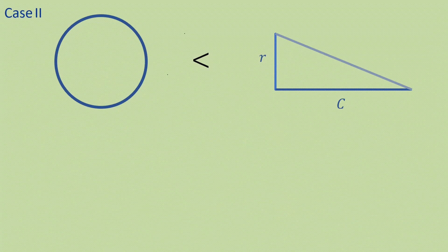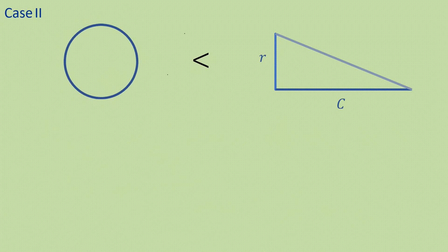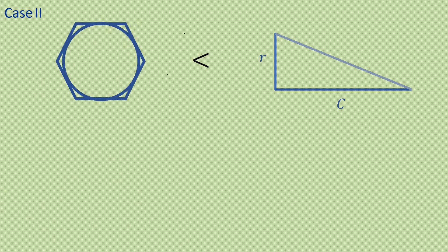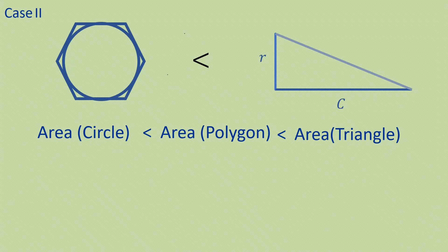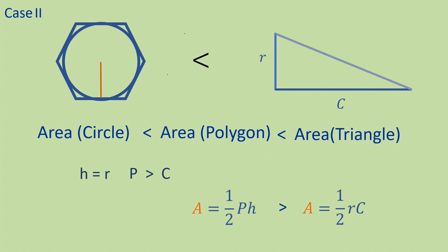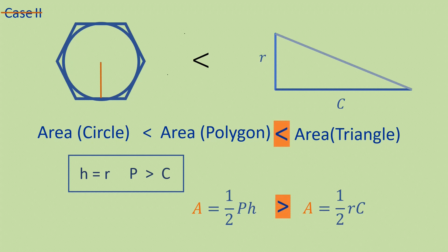Case 2: assume that the area of the circle is smaller than the area of the triangle. Circumscribe a square, then a pentagon, then a hexagon, and so on around the circle, until the polygon's area lies between the circle's area and the triangle's area. In this case, the radius and the height are equal since we are circumscribing. But comparing the perimeter of the polygon to the circumference, p is greater than c because we are circumscribing it. From that, we deduce that the area of the polygon is greater than the area of the triangle — another logical contradiction. Therefore, the circle cannot have a smaller area than the triangle.